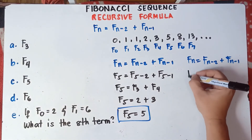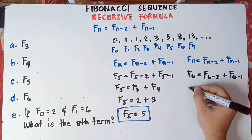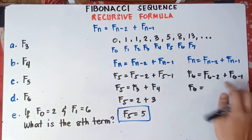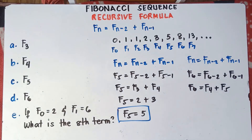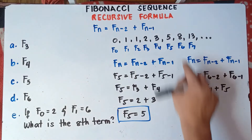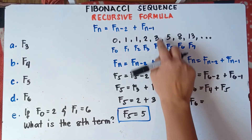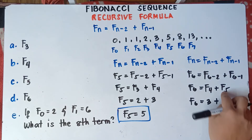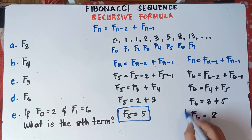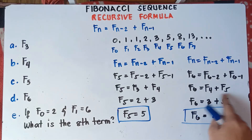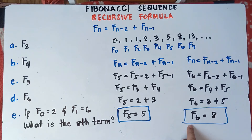How about F sub 6? F sub 6 equals F sub 6 minus 2 plus F sub 6 minus 1 — that is F sub 4 plus F sub 5. You already know the answer for F sub 6 is 8. F sub 4 is 3, and F sub 5 is 5. So 3 plus 5 — that's why your F sub 6 is 8. Once you have the values of F sub 4 and F sub 5, you just add them to get F sub 6.